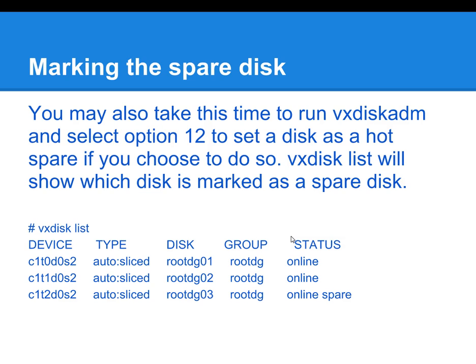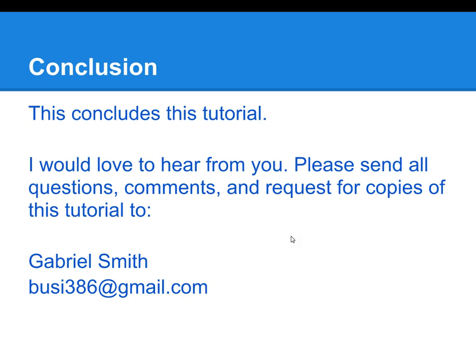The idea is that if you lose one disk, the hot spare kicks into action and you will have two disks instead of one after losing one of the disks. The hot spare adds reliability and redundancy to your system. That pretty much concludes this tutorial. If you have any questions, comments, or concerns, or want copies of this presentation, send an email to busy386@gmail.com.